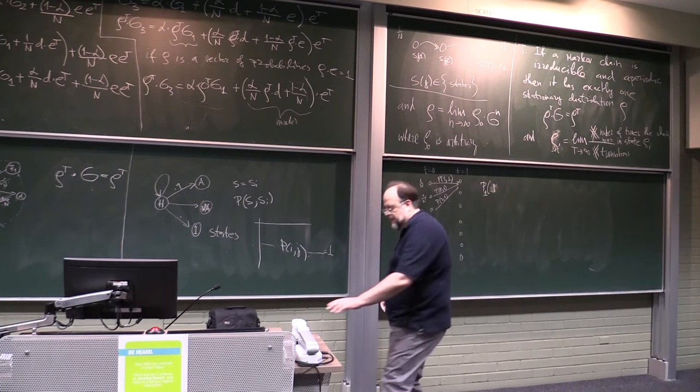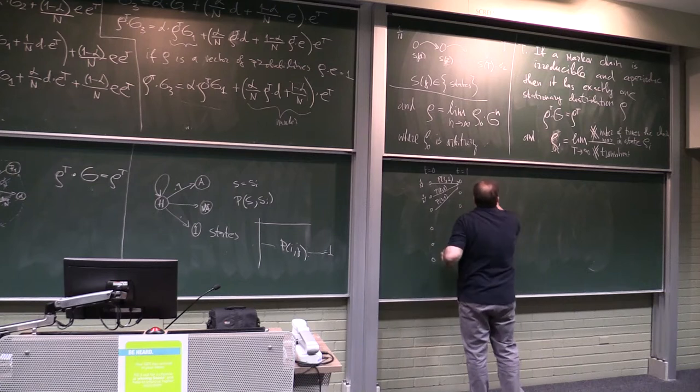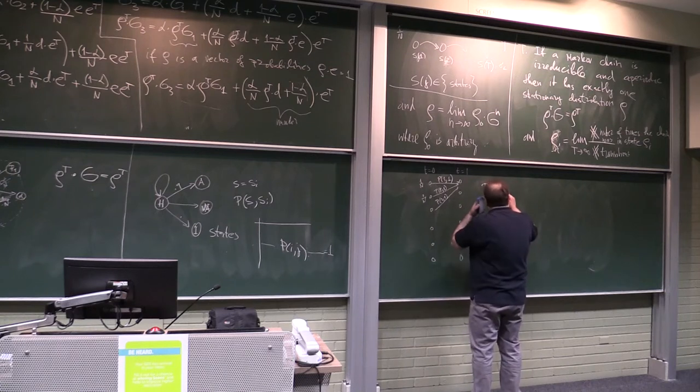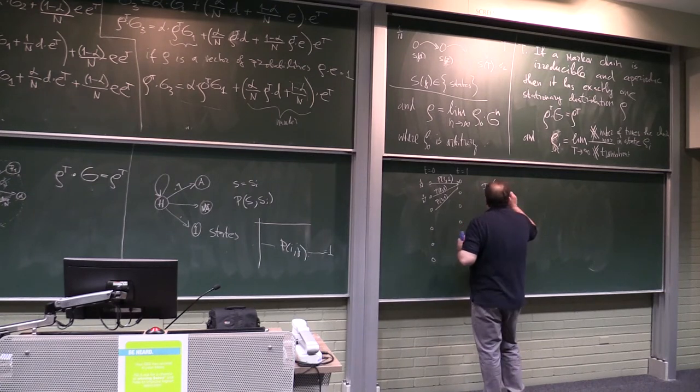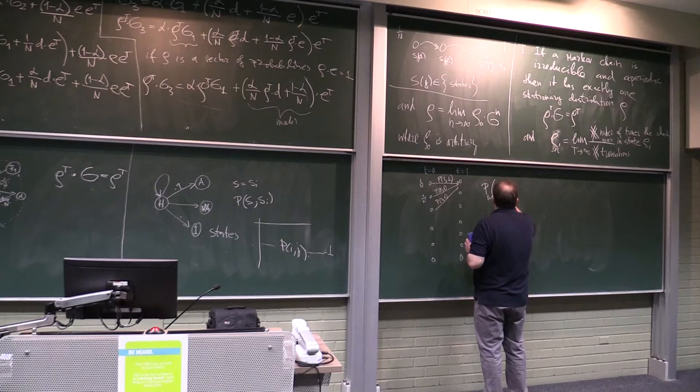How do we write this? So, this is probability that for when t equals to 1, to be in a state, say, s_k.